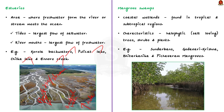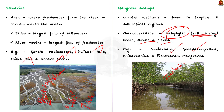Mangrove swamps are coastal wetlands found in tropical and subtropical regions. They are characterized by halophytic (salt-loving) trees and shrubs. These mangrove wetlands are often found in estuaries where freshwater meets salt water. Examples of mangrove swamps in India include Sundarbans mangrove forest, Godavari-Krishna mangroves, Bhitarkanika mangroves, and Pichavaram mangroves.